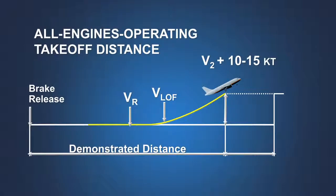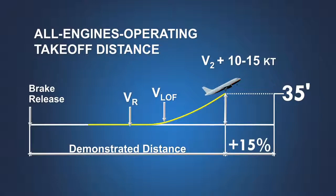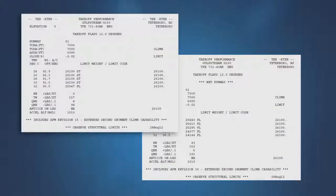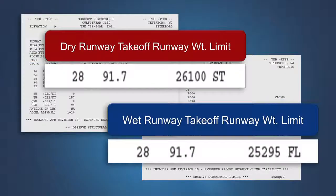Note that the all-engines-operating takeoff distance for a wet runway remains unchanged from that for a dry runway. The all-engines-operating takeoff distance screen height for a wet runway remains at 35 feet and still must include the 15 percent margin. In most cases, the maximum allowable takeoff weight on a wet runway will remain less than the allowable weight on a dry runway, even though the wet runway case includes credit for available reverse thrust and reduced screen height.